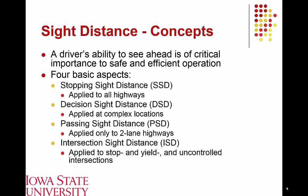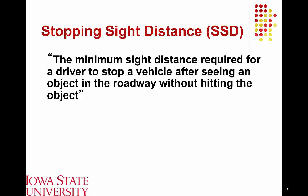We'll get into each of these over the course of CE 355, but the primary emphasis today will be on the first three: stopping, decision, and passing sight distance. Stopping sight distance is likely the most important in geometric design of roadways. The AASHTO Green Book defines it as the minimum sight distance required for a driver to stop a vehicle after seeing an object in the roadway without hitting that object.